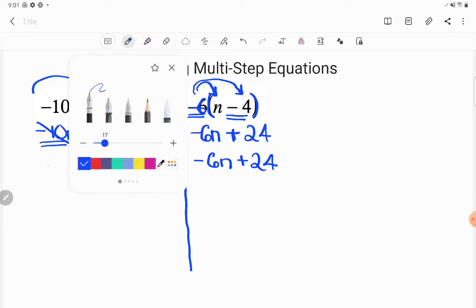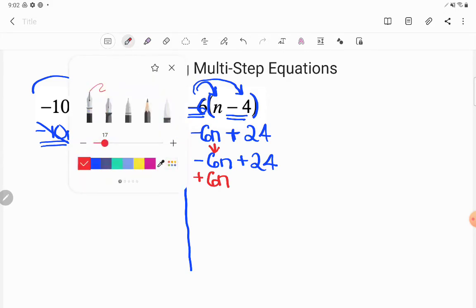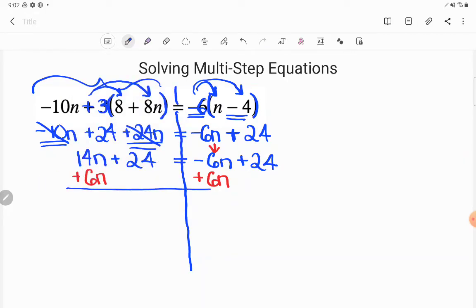Now it would be very wise for me to get the letters, the variable terms, to the same side. Now, again, I like getting rid of negatives if I can. So that negative 6n is right where my eyes go to. I'm going to do the opposite. I'm going to add 6n. Now I can do whatever I want as long as I do it to the other side. Notice how I jump from just putting the n term right under the other n term because I know what it's going to be able to combine with. 14n plus 6n is 20n. I haven't done anything to touch my 24. And on this side, negative 6n and positive 6n cancel. And I have plus 24 or just positive 24. Cool. Looking good.